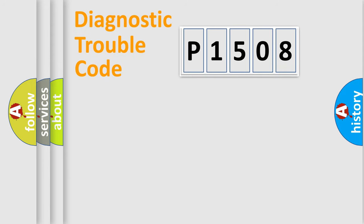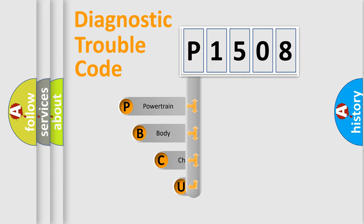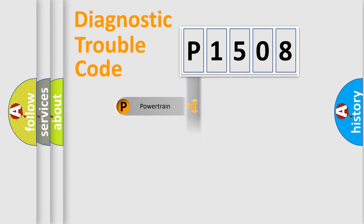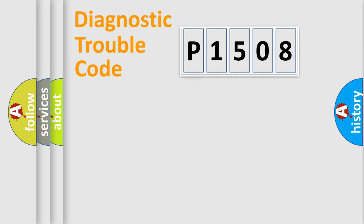Let's do this. First, let's look at the history of diagnostic fault code composition according to the OBD2 protocol, which is unified for all automakers since 2000. We divide the electric system of the automobile into four basic units: Powertrain, Body, Chassis, and Network.